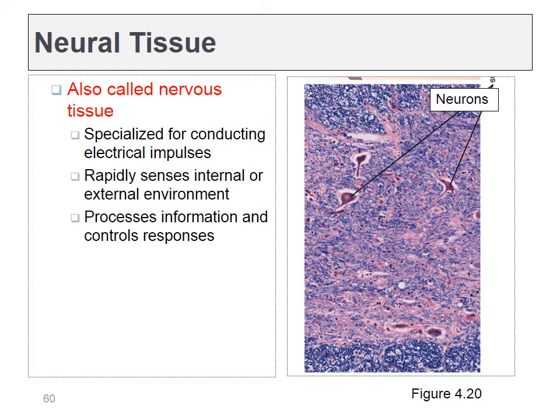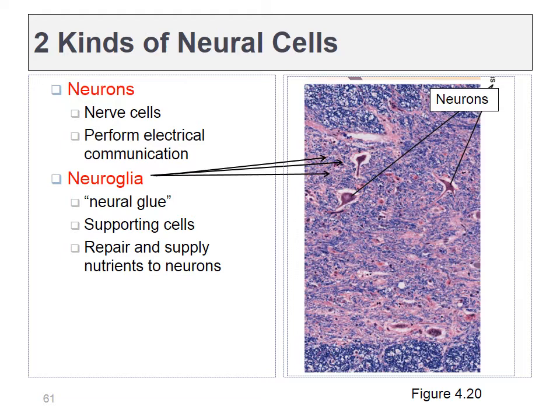Neural tissue is our third main tissue type, involving neurons with long extensions called axons, and the rest is glia — very fascinating cells, though not as interesting to look at under the microscope. We'll cover neural tissue in much greater depth in BI-232. For now, make sure you can identify the two major cell types: neurons and glia.